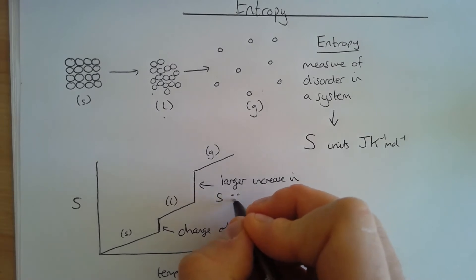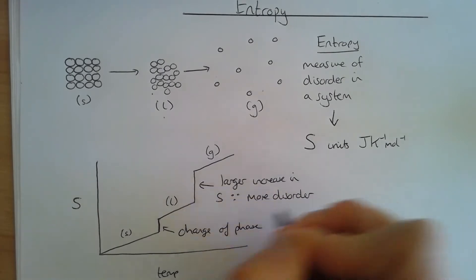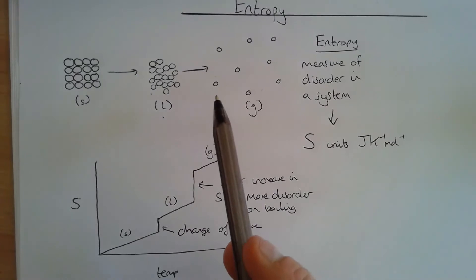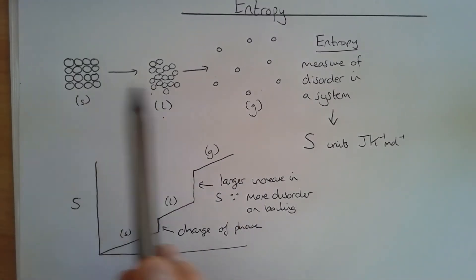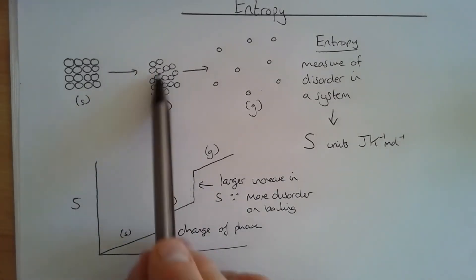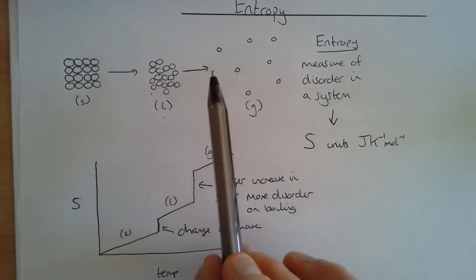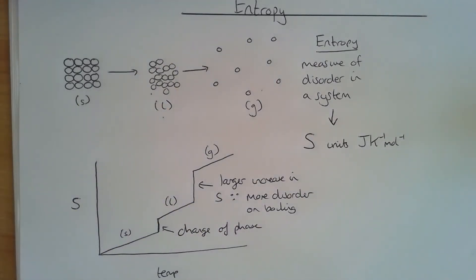This is because there is more disorder on boiling. Looking at our particle diagram, going from a solid to a liquid we've just rearranged the particles - there are more degrees of movement, they can move around rather than just vibrating on a fixed point. However, going from a liquid to a gas there is a lot more disorder; there are many more ways and directions these particles can move. So that explains entropy in terms of state.